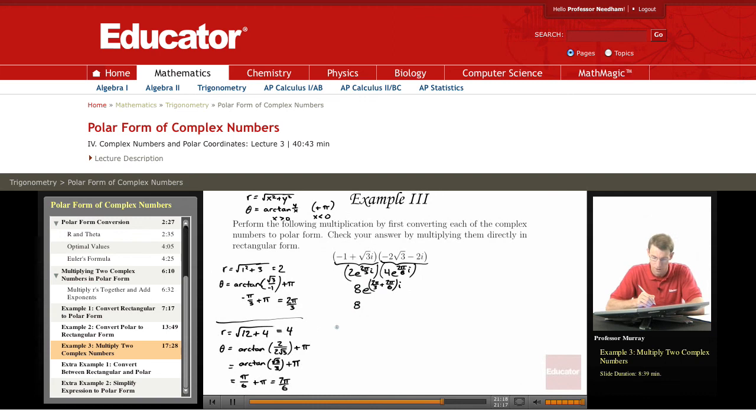So that's 8e to the, let's see, 2pi over 3 is 4pi over 6, so you get 11pi over 6i.